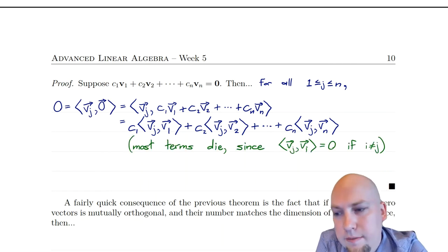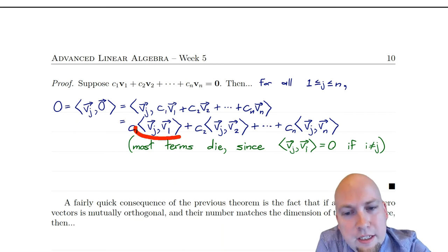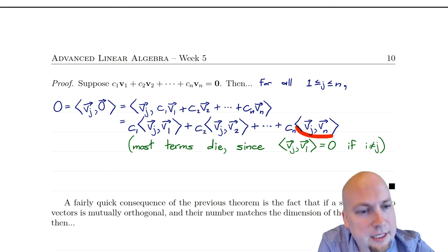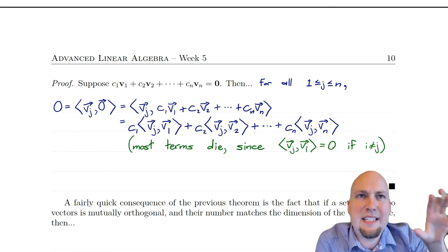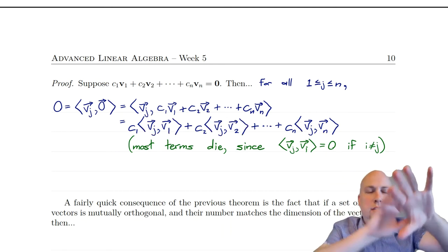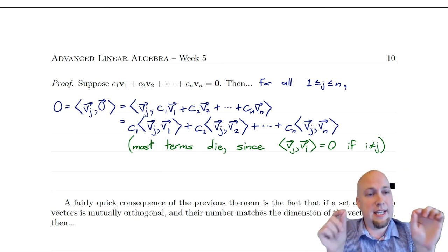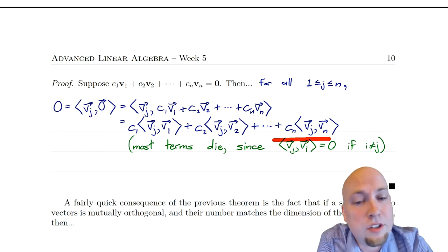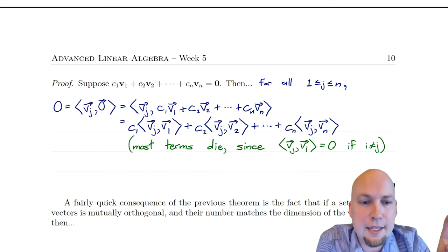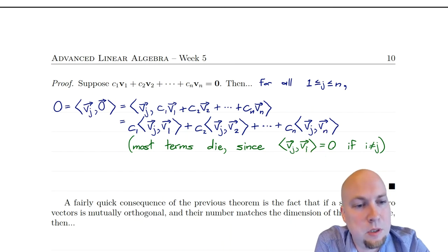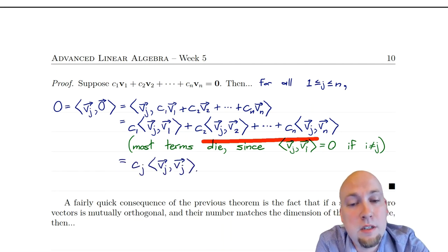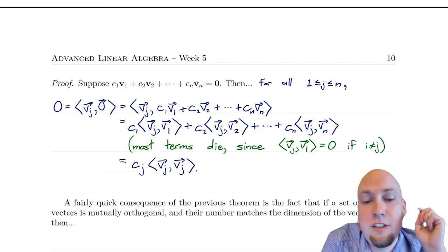Now I notice that what I've got are inner products of two vectors from the set B. But B is a mutually orthogonal set, so all of these inner products equal zero — except for one. Every vector in the set is orthogonal to every other vector in the set. So the only term in this sum that does not vanish is the one where it's v_j inner product with v_j. Whenever the subscript is not j, the term goes away — that inner product is zero. So all I end up with is the term c_j times the inner product of v_j with v_j.